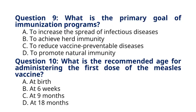Question 9. What is the primary goal of immunization programs? A. To increase the spread of infectious diseases. B. To achieve herd immunity. C. To reduce vaccine-preventable diseases. D. To promote natural immunity. The correct answer to question 9 is option C, to reduce vaccine-preventable diseases. The primary goal of immunization programs is to reduce the incidence and prevalence of vaccine-preventable diseases by providing immunity to individuals and populations through vaccination.